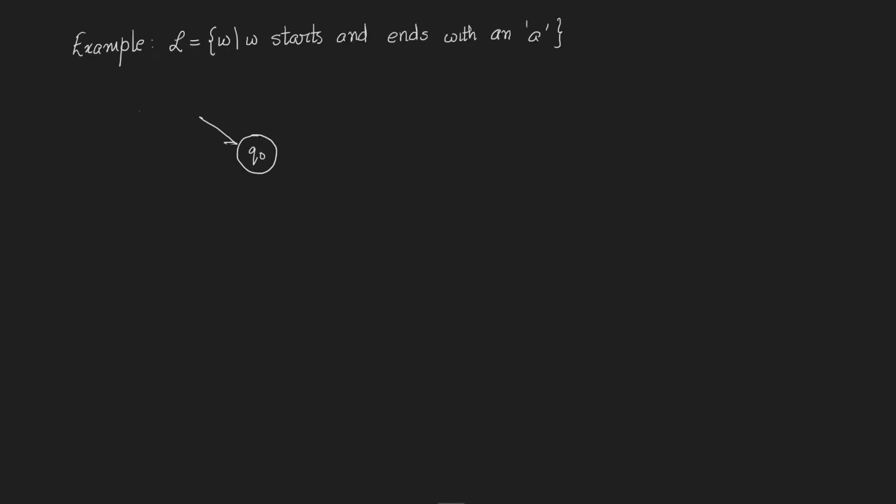We start by drawing the first state q0 which we label as the start state by indicating an incoming arrow labeled start. From q0 there are two possibilities: either we get an A or we get a B. Since q0 is the start state, this indicates the first symbol that we see.